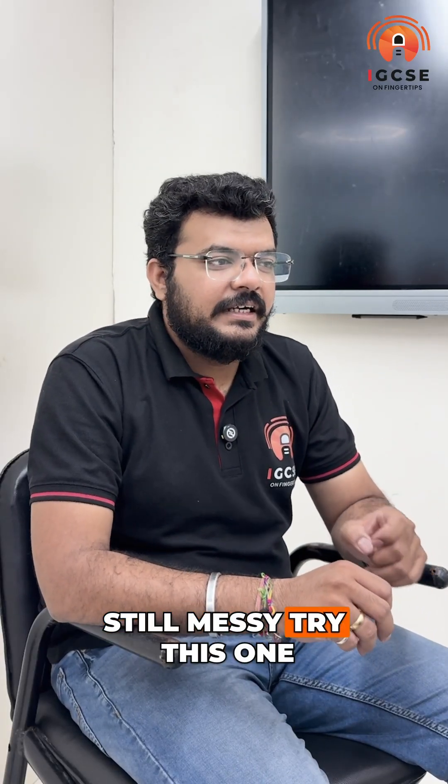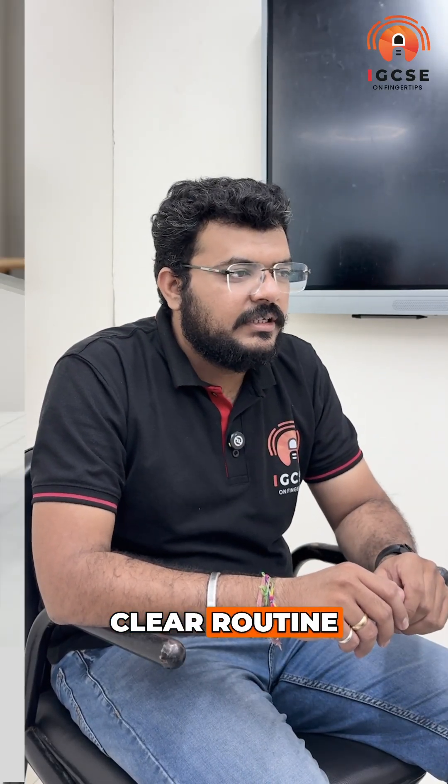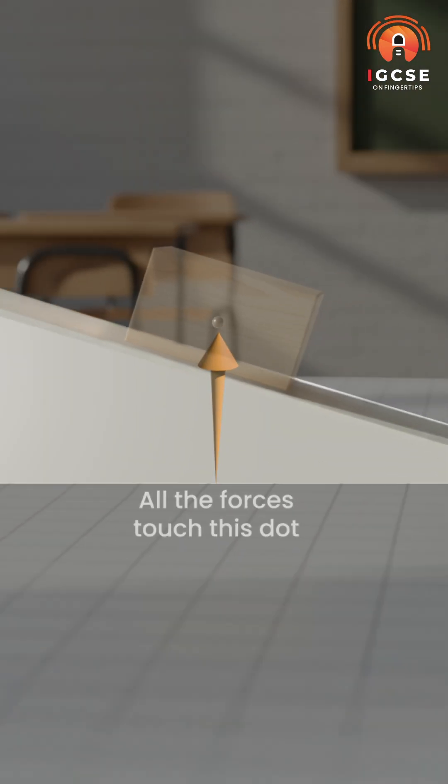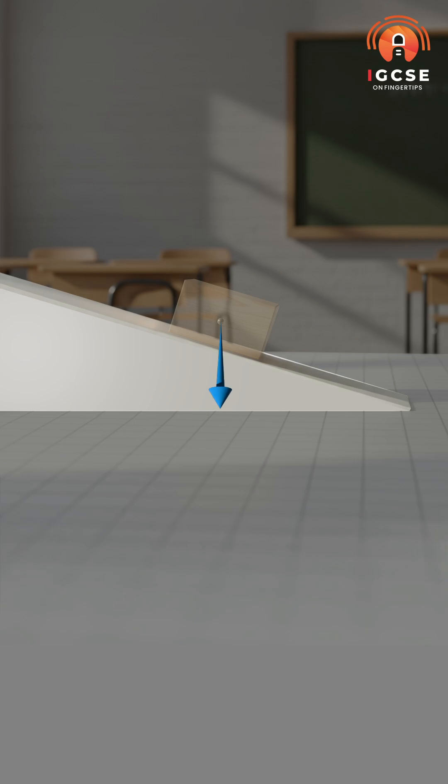Free body diagrams feel messy? Try this one clear routine. Isolate the object, draw a dot - all the forces will touch this dot. Now weight goes straight down, label it w equals mg. Now surface pushes out of the